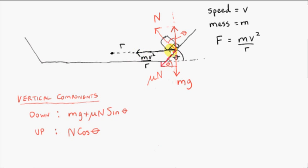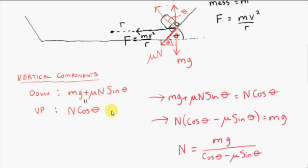The vertical component of the resultant force is zero — F is entirely in the horizontal direction. Since its vertical component is zero, the sum of the downward vertical components must equal the upward vertical components. Equating these and making N the subject, we get N equals mg over (cos theta minus mu sine theta).